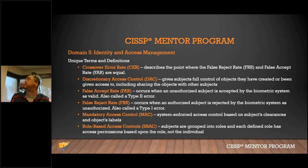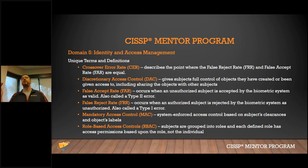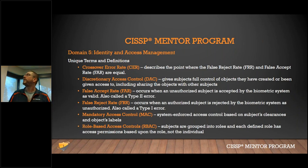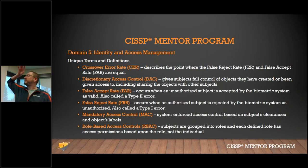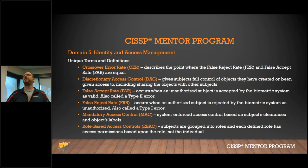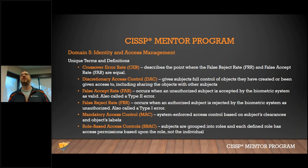The crossover error rate is where your false reject rate and false accept rate are equal. You don't want too many false rejections because users can't do their job — it impacts productivity. And too many false acceptances means people get access to things they shouldn't.